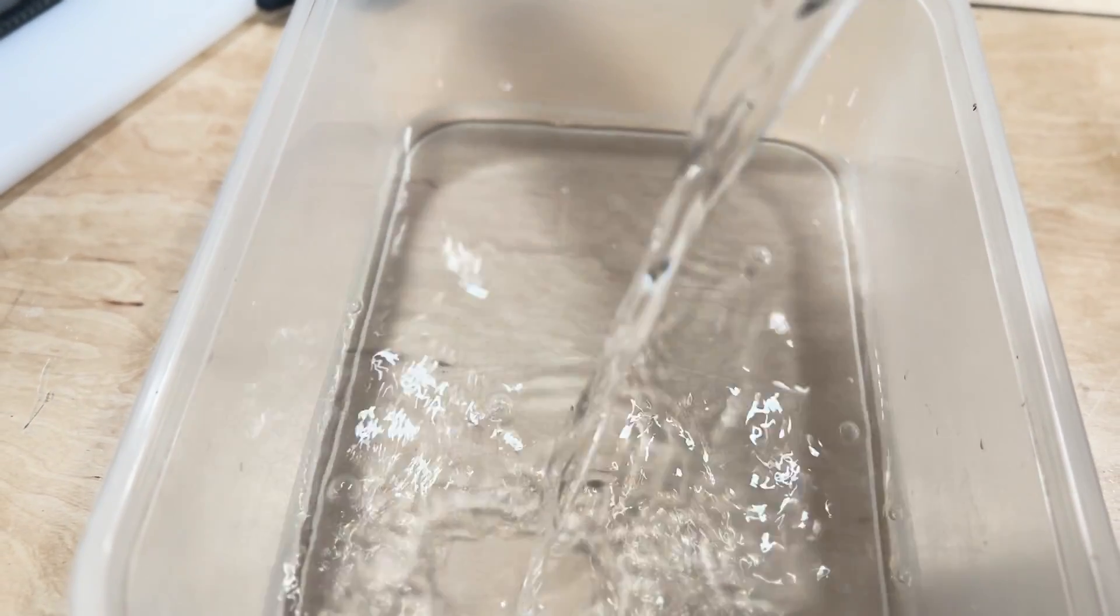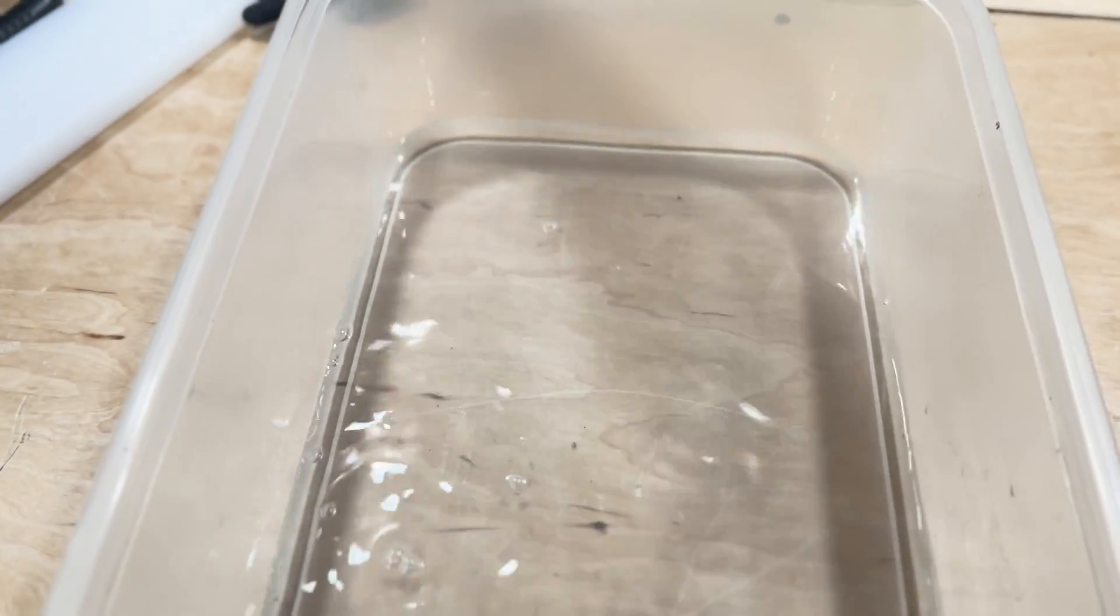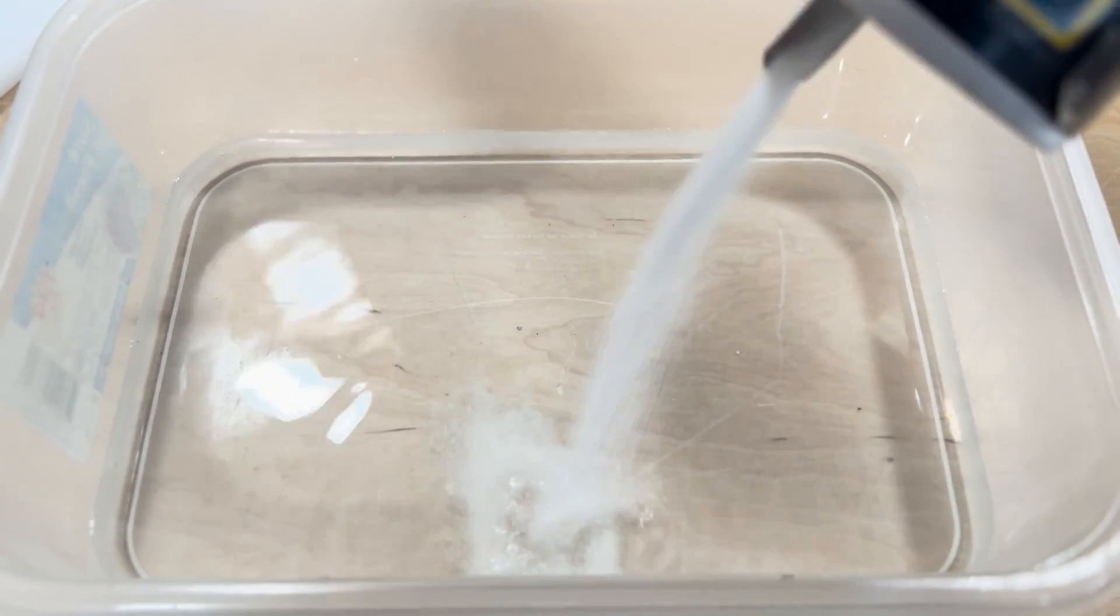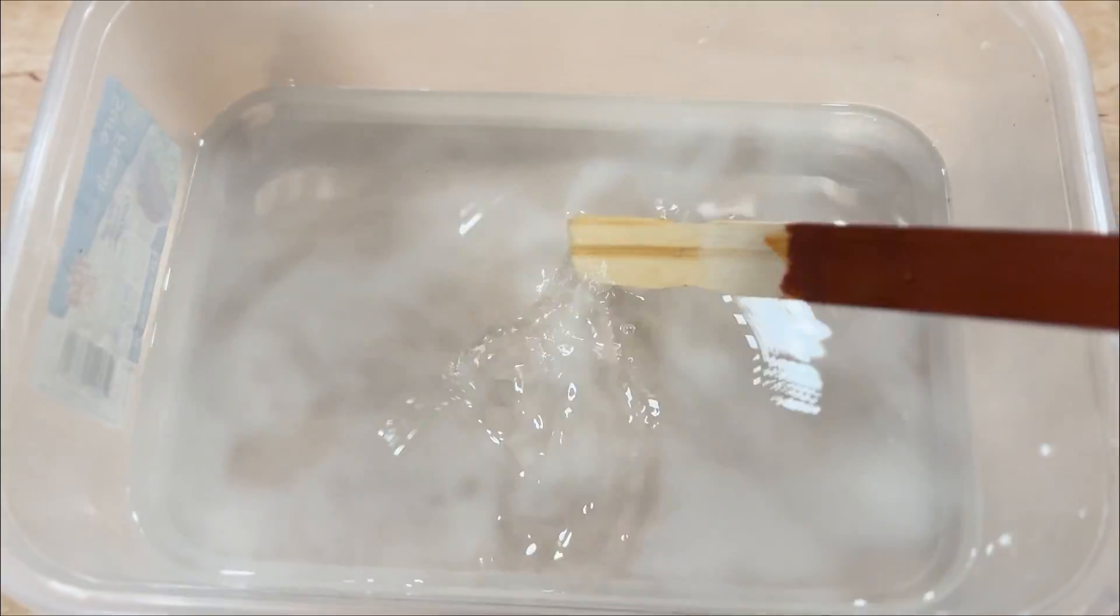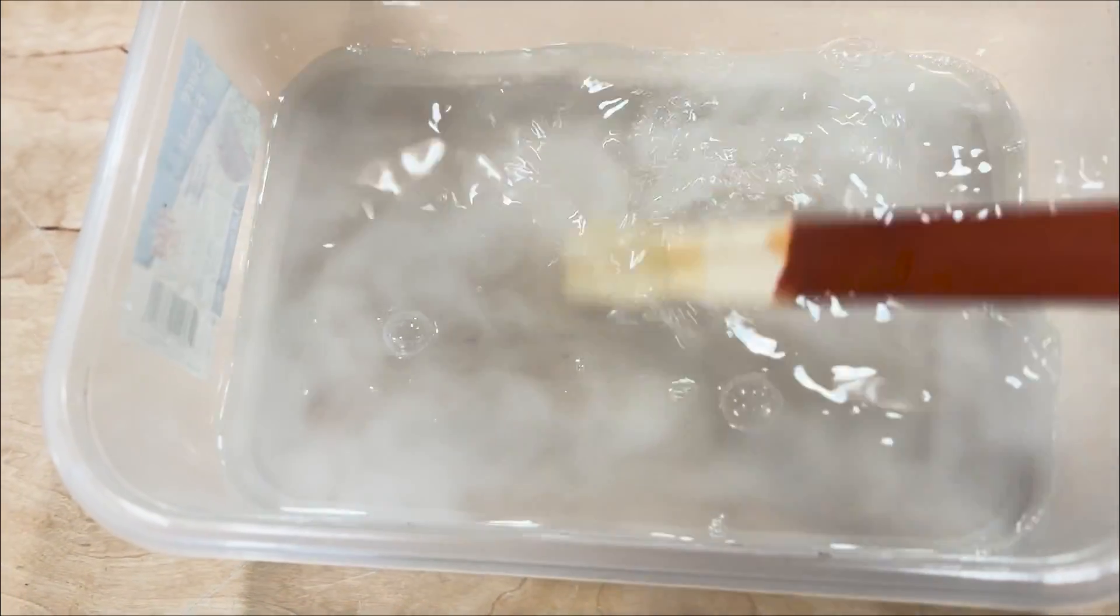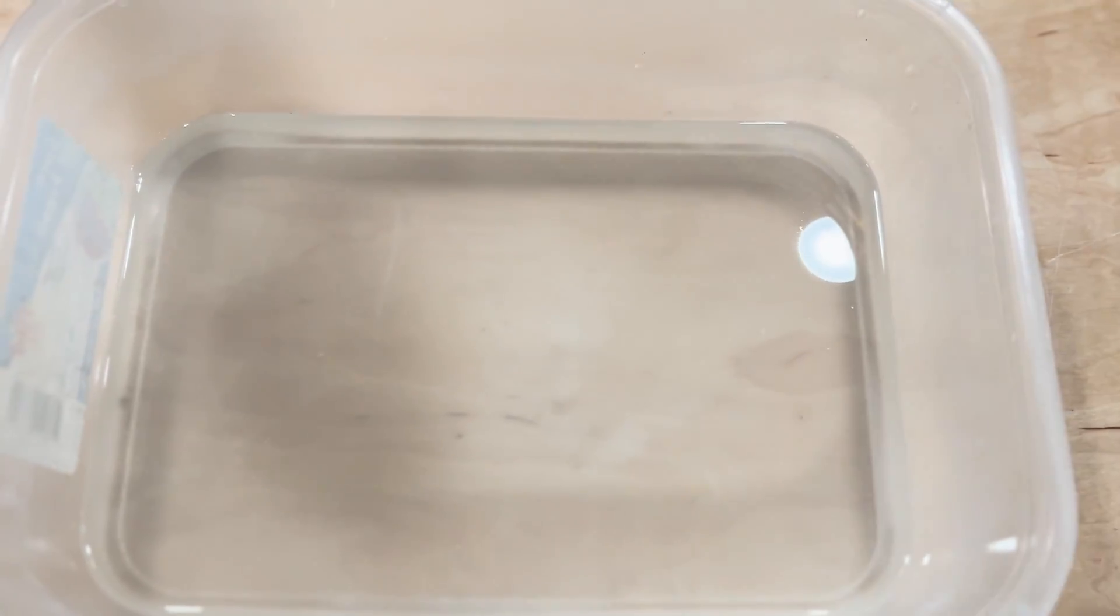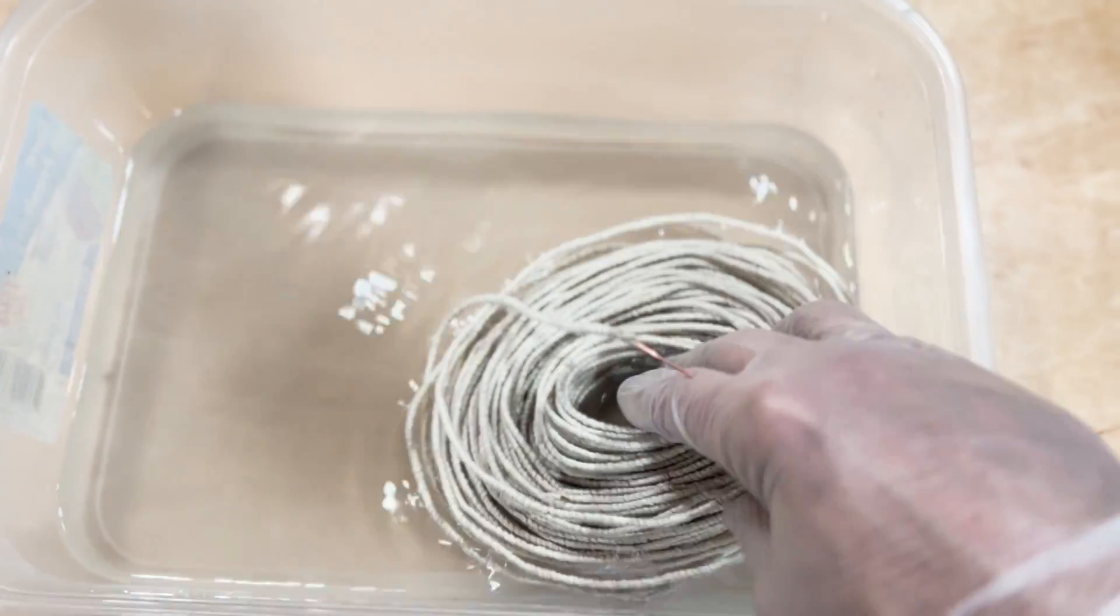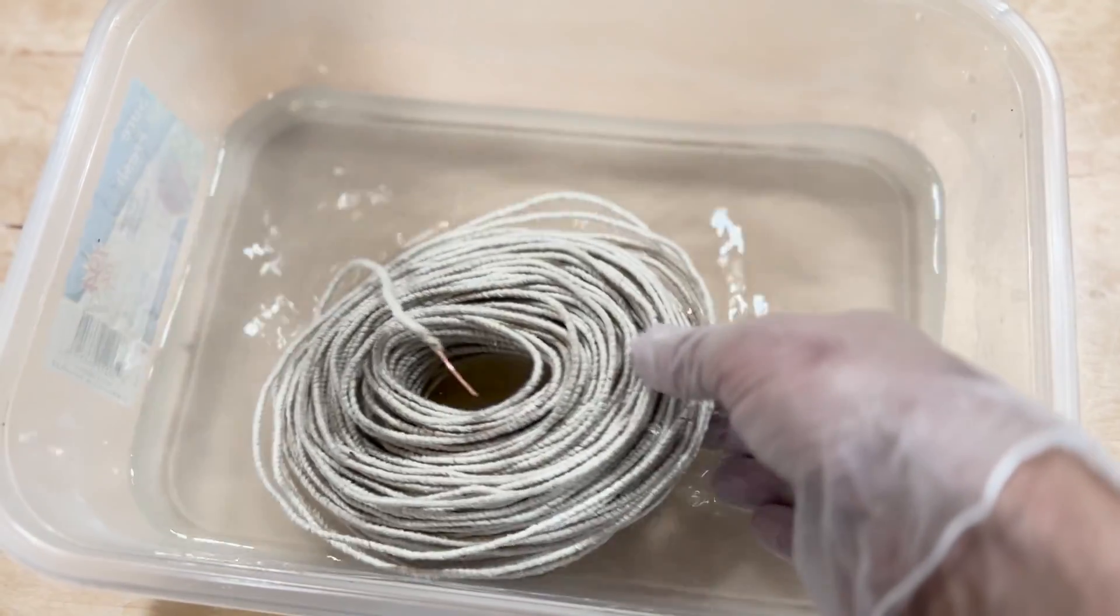First, the water goes in the empty container. Next, salt goes into the water. Stir everything thoroughly until the salt is dissolved. The copper conductor which is covered in cotton has to be immersed in the solution for at least a couple of hours.